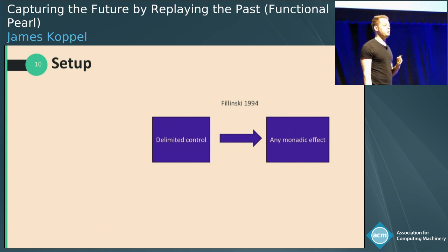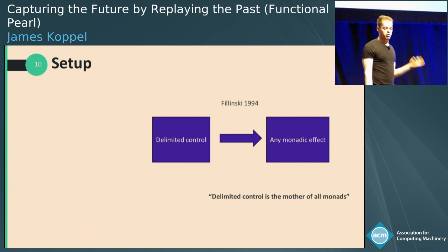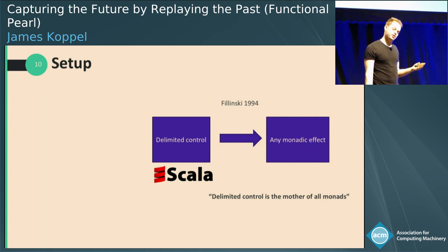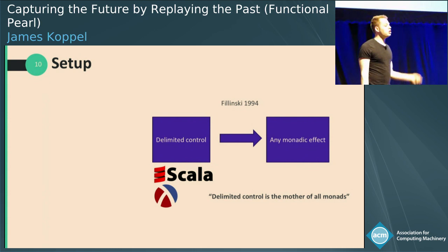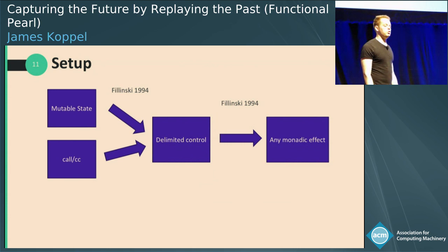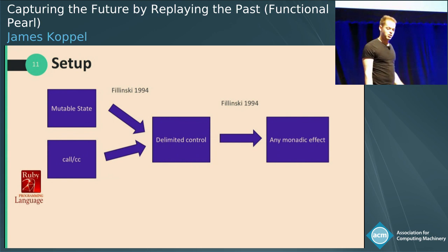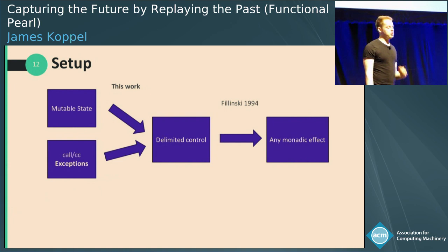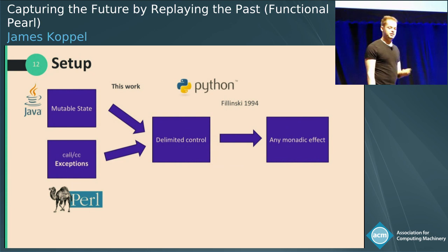It's been known for a while since Filinski 1994 that if you have delimited control, you can use that to get any monadic effect in direct style. So delimited control is the mother of all monads. This is great news if your language has delimited control — I can name two such languages: Scala has it, as well as Racket and other schemes. Luckily, in that same paper, Filinski showed that you can implement delimited control with mutable states and ordinary continuations, call CC. In this work, we replace call CC with exceptions, and now this really opens the floodgates as to what languages we can do this in.